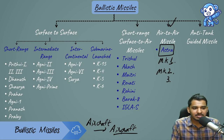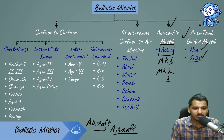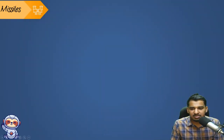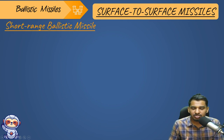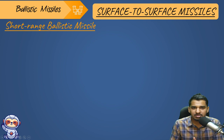For anti-tank guided missiles, Nag is surface launched towards tanks. India also uses foreign missiles: Spike (surface launch) and Milan (foreign). Spice 2000 is a bomb used by aircraft. In the next lecture, we will begin studying the various surface-to-surface missiles in detail, starting with Prithvi-1, Prithvi-2, and Prithvi-3. Thank you for this lecture.